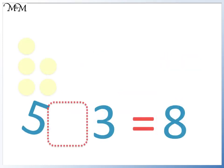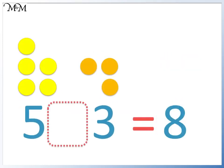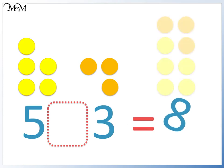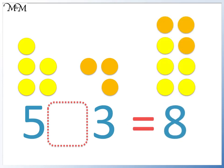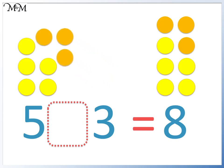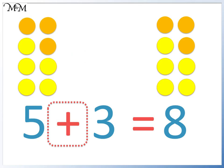Here we have five, three and eight. Five and three are the same value as eight when we combine them. We use a plus or add sign to show that we have combined or added these counters.